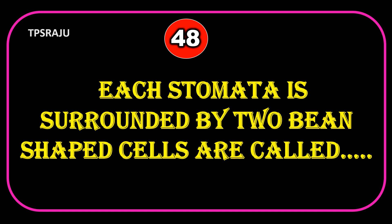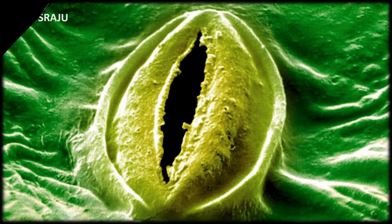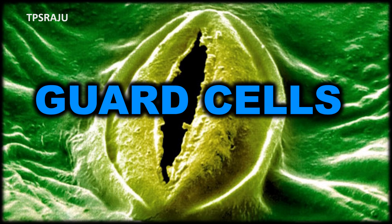Each stoma is surrounded by two bean-shaped cells called guard cells.